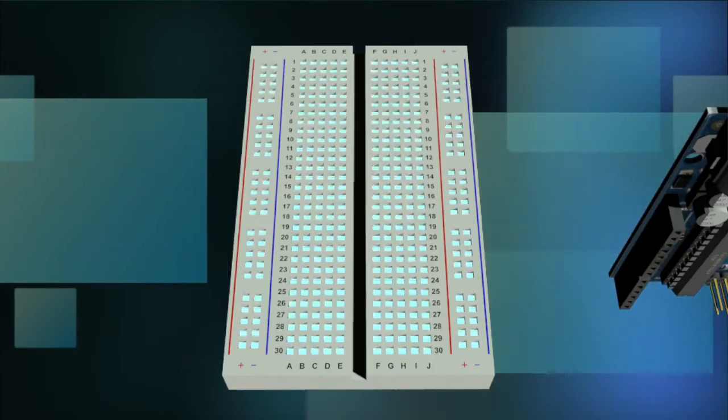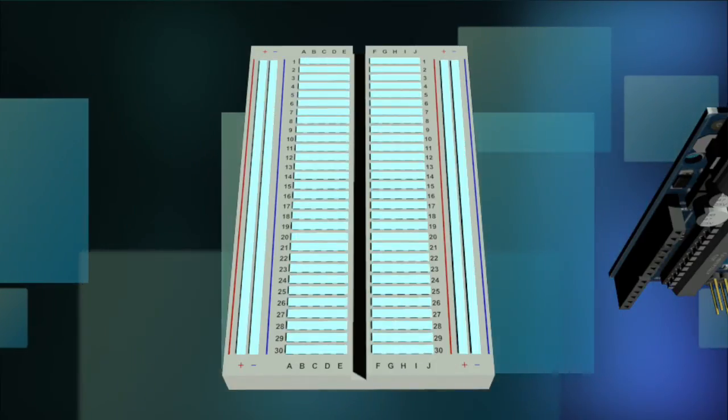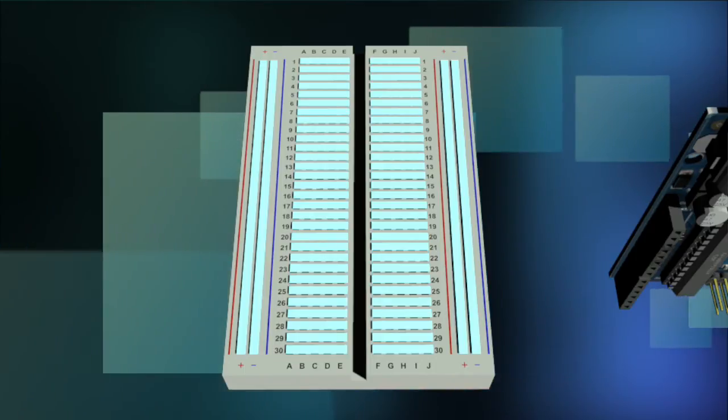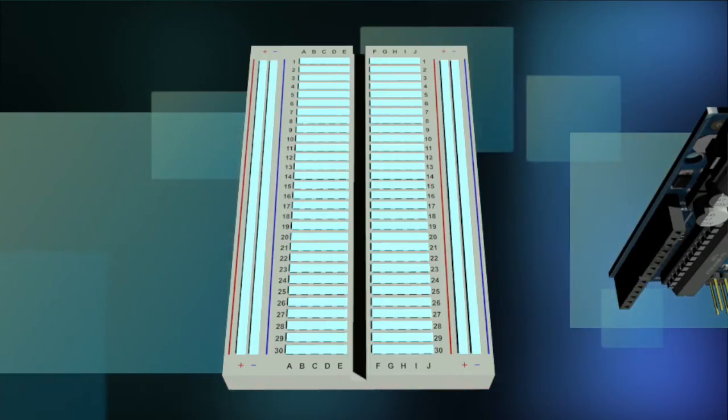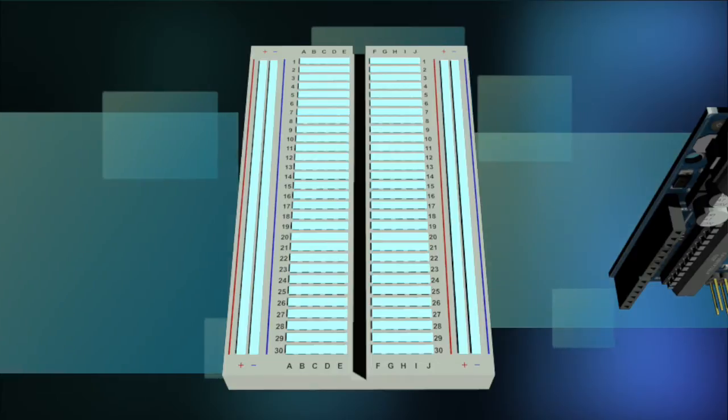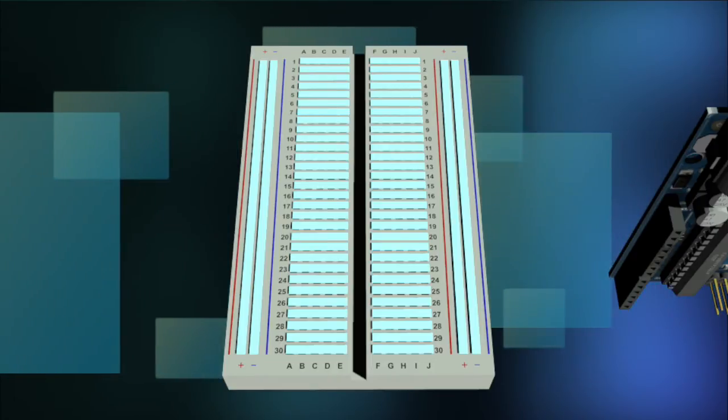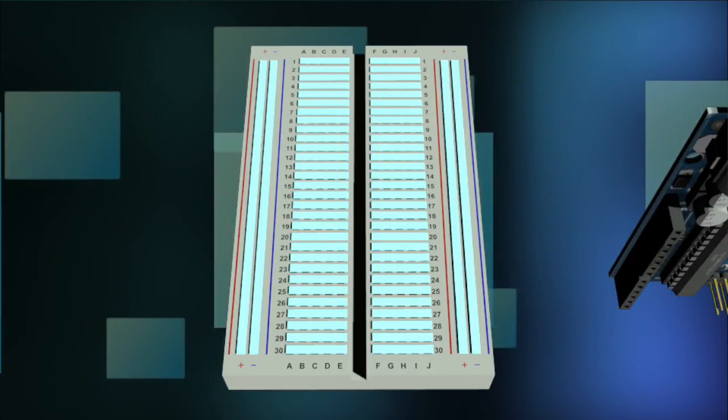The horizontal and vertical rows of the breadboard carry electricity through thin metal connectors under the plastic with holes. The 5 holes in each horizontal row are connected electrically through metal strips inside the breadboard. The vertical strips that run the length of the breadboard are electrically connected.